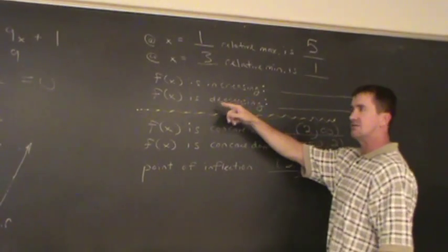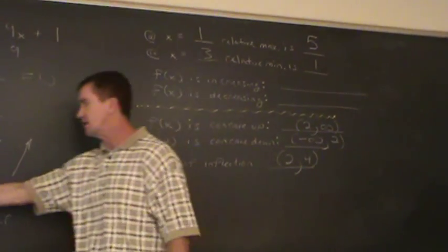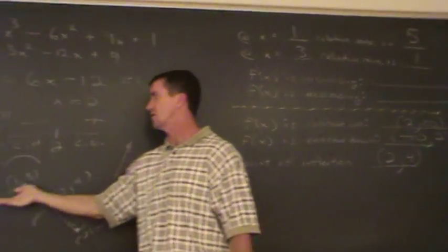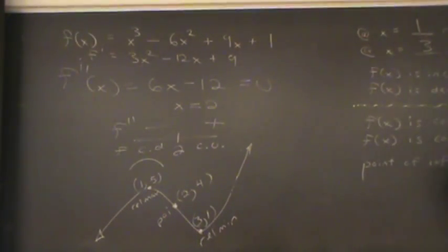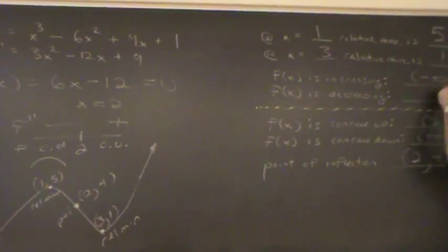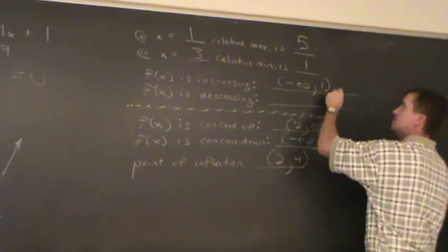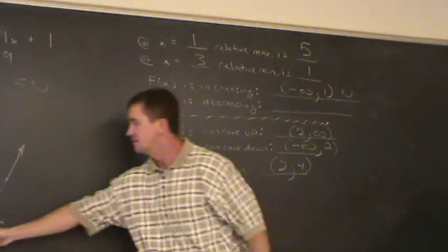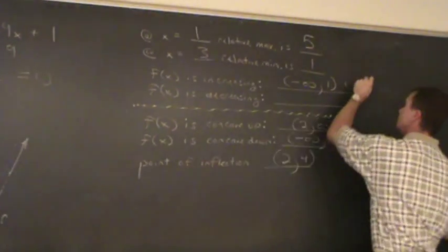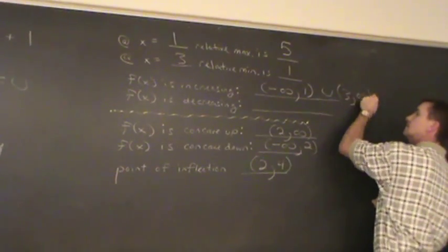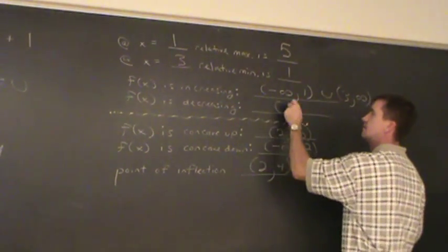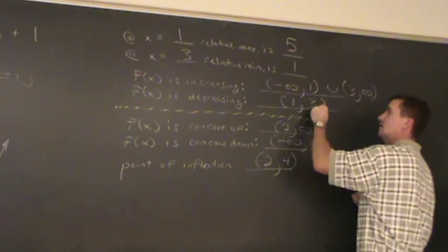Where's the function increasing and decreasing? Back from what we have, we can check this out. What we had earlier with the first derivative. I never filled this in. But the function is increasing from negative infinity to x equal to 1. And again, it increases from x equal to 3 to infinity. Function is decreasing on the interval 1 to 3.